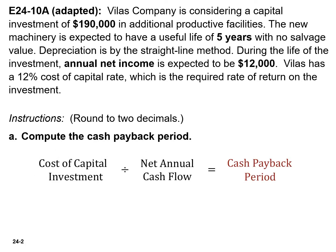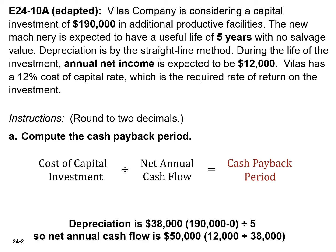If cash flow information is not available, we can estimate net annual cash flow by adding back depreciation expense to net income. Net income is $12,000, and it includes depreciation expense of $38,000. So if we add these numbers together, we get an estimated net annual cash flow of $50,000.